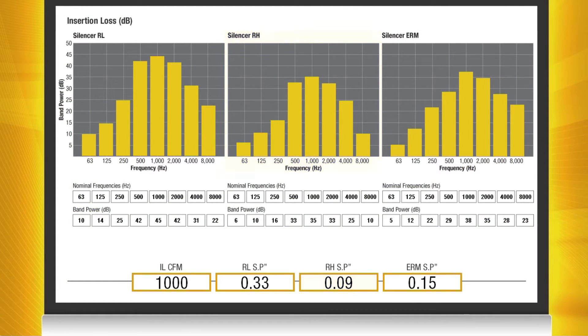As you can see the pressure drop is significantly lower than that of the RL silencer being measured at 0.1 inches of static pressure. The insertion loss is also lower throughout each octave band.